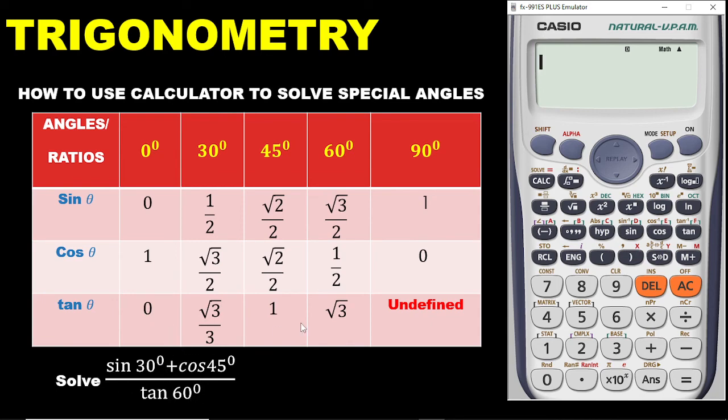Sin 30 degrees plus cos 45 divided by tan 60. This is fraction. And to do that, you need to click the fraction button. Then you enter this. So we have sin 30. Then I place 30 there. Close my bracket. Then plus cos 45. So we hit the cos. And then 45. You close the bracket as well. Then you move the down arrow key. And then you enter tan 60. That is 6, 0. Then you close your bracket. You hit the equal sign button. Bang. You are getting this. And this is so cool and very easy.